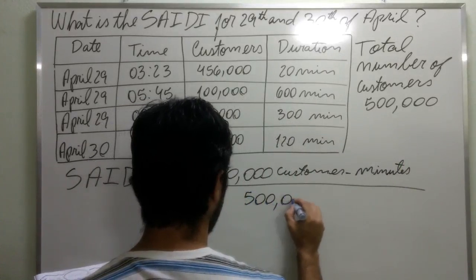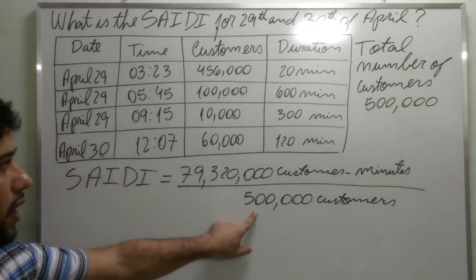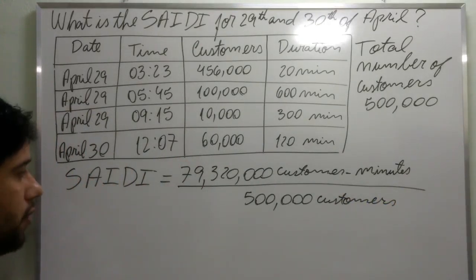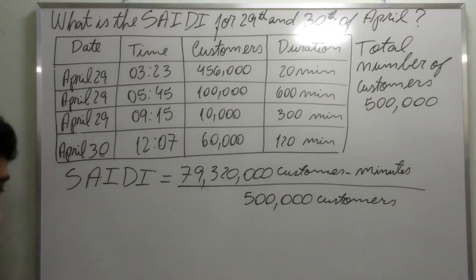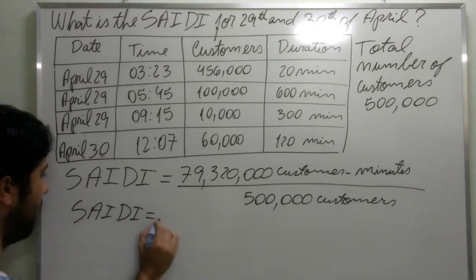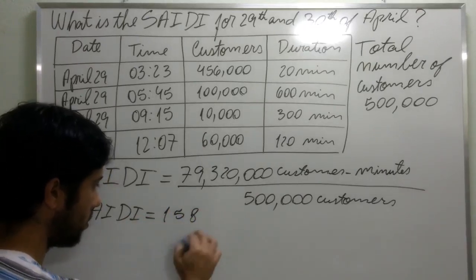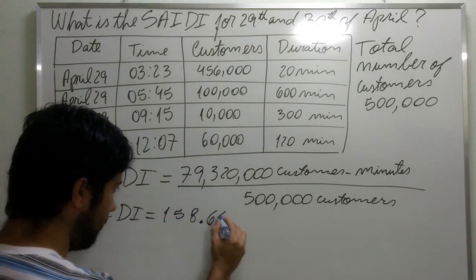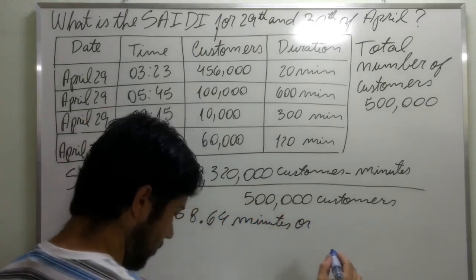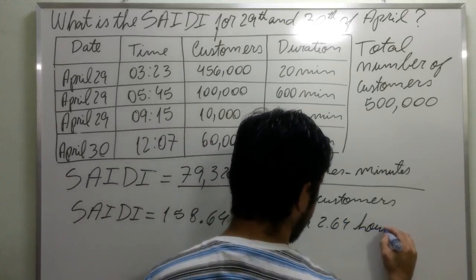79,320,000 customer minutes divided by 500,000 — where 500,000 is the total number of customers for that specific area of concession or distribution utility — gives us a SETI of 158.64 minutes, or 2.64 hours.